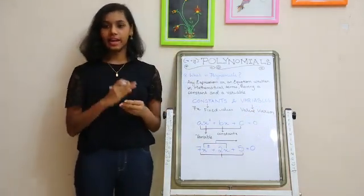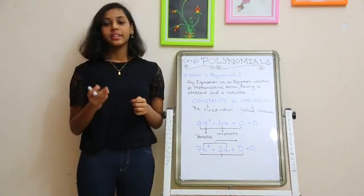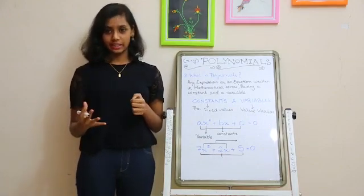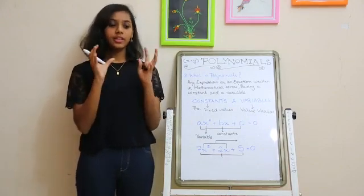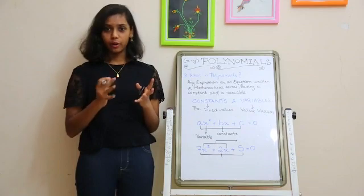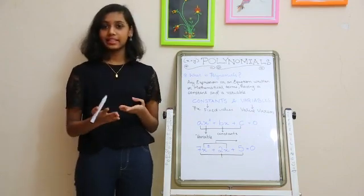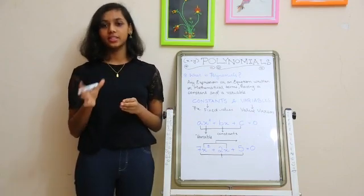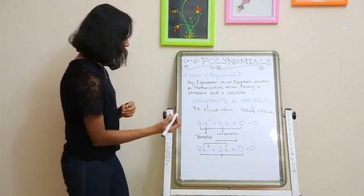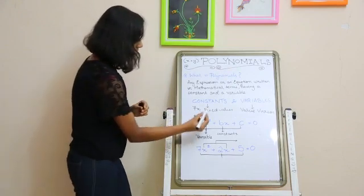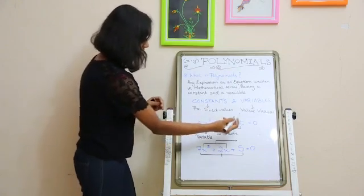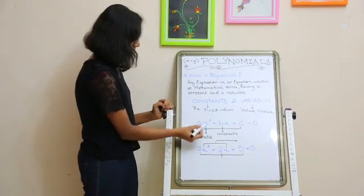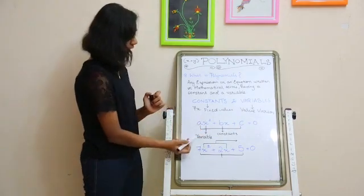Every polynomial has a standard form, which is ax² + bx + c. In this standard form, a, b, and c are the constants and x is the variable.